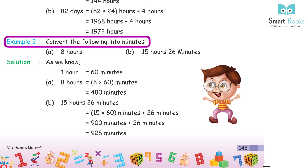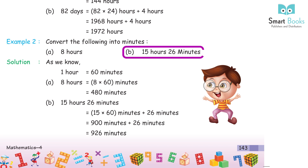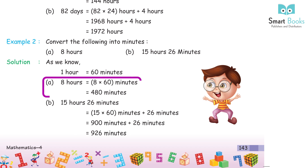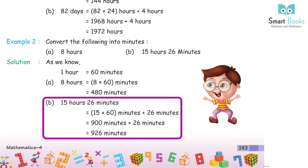Example 2: Convert the following into minutes. A. 8 hours. B. 15 hours 26 minutes. Solution: 1 hour = 60 minutes. A. 8 hours = 8 × 60 = 480 minutes. B. 15 hours 26 minutes = 15 × 60 + 26 = 900 + 26 = 926 minutes.